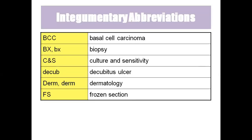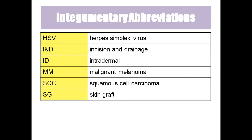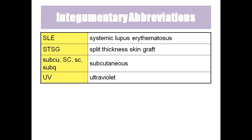Abbreviations: BCC — basal cell carcinoma, which is non-cancerous cancer to the basal cell membrane. BX — biopsy. C&S — culture and sensitivity. DCUM — decubitus ulcer. Derm — dermatology. FS — frozen section. HSV — herpes simplex virus. I&D — incision and drainage. ID — intradermal. MM — malignant melanoma, which is highly cancerous. SCC — squamous cell carcinoma. SG — skin graft. SLE — systemic lupus erythematosus, an autoimmune disorder. STSG — split thickness skin grafting. UV — ultraviolet.